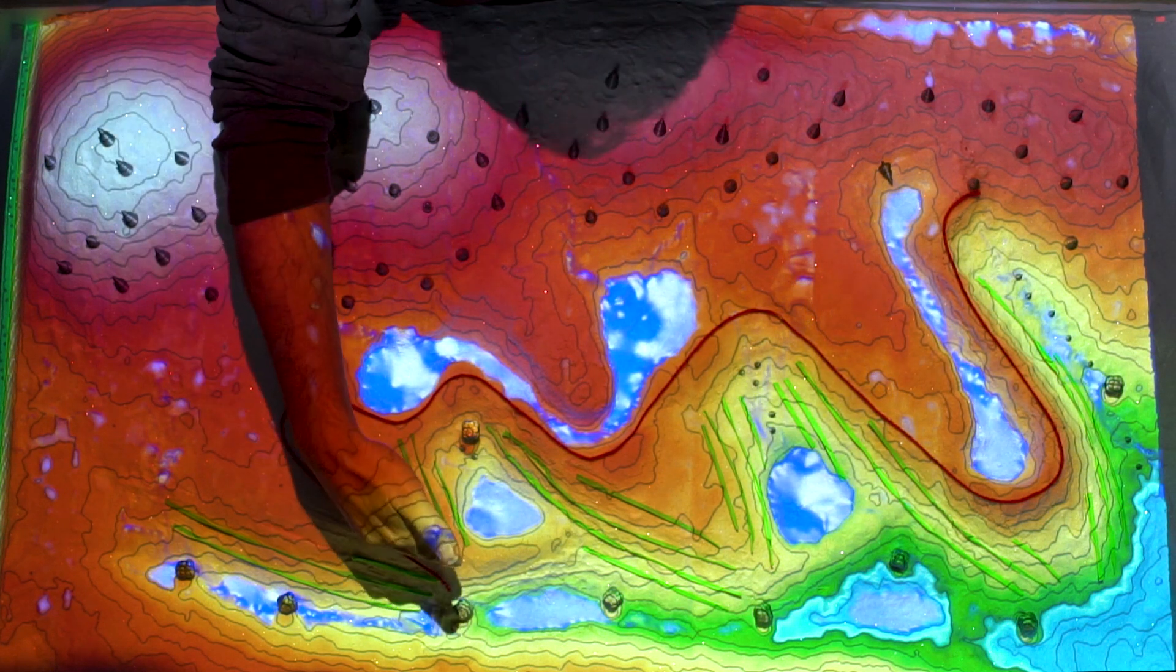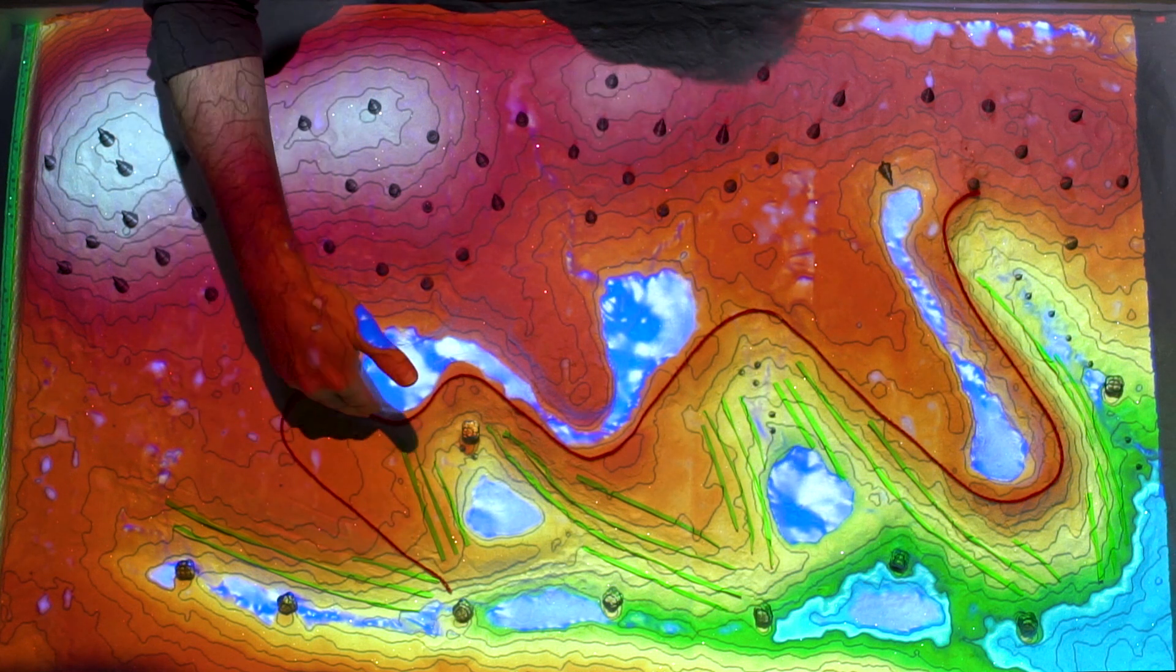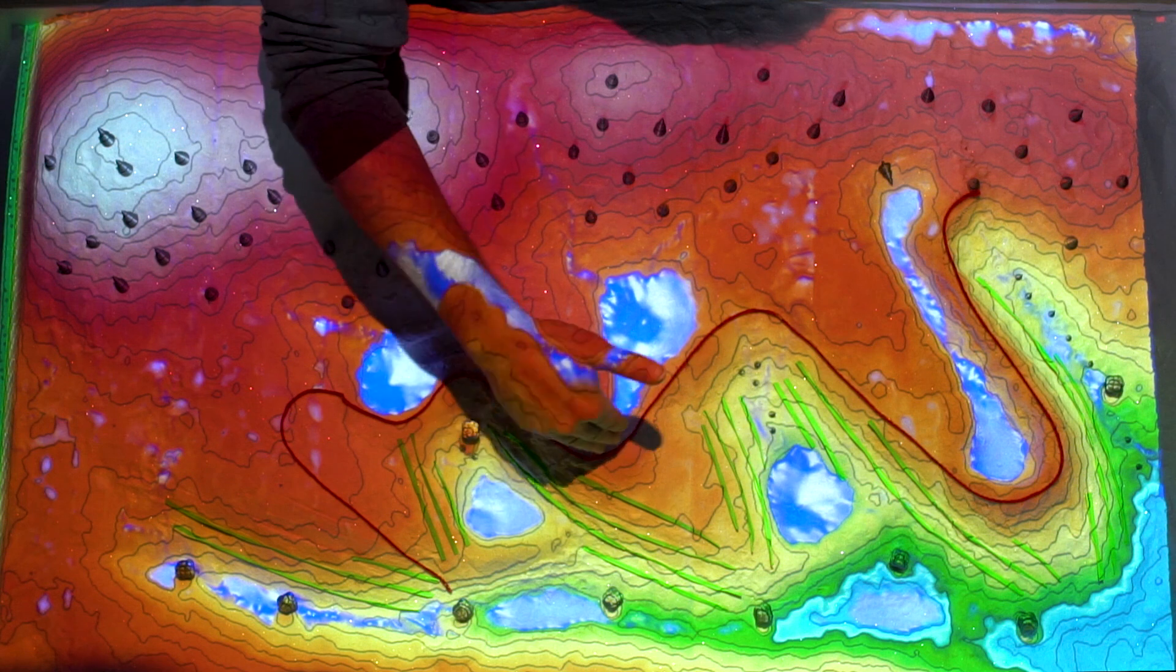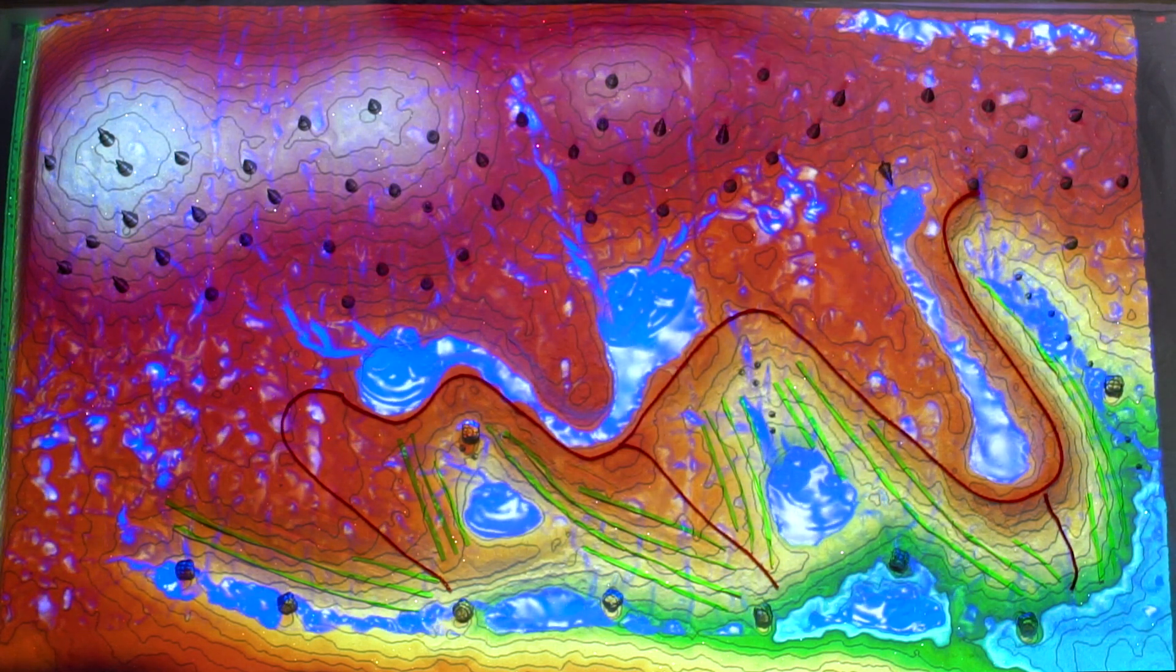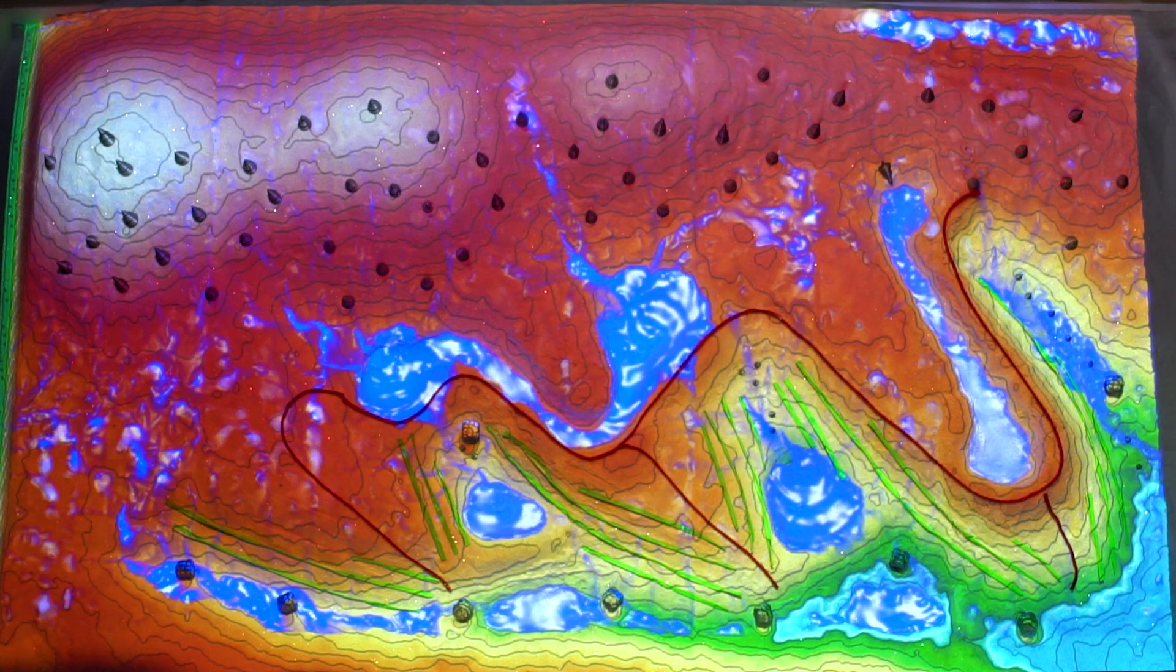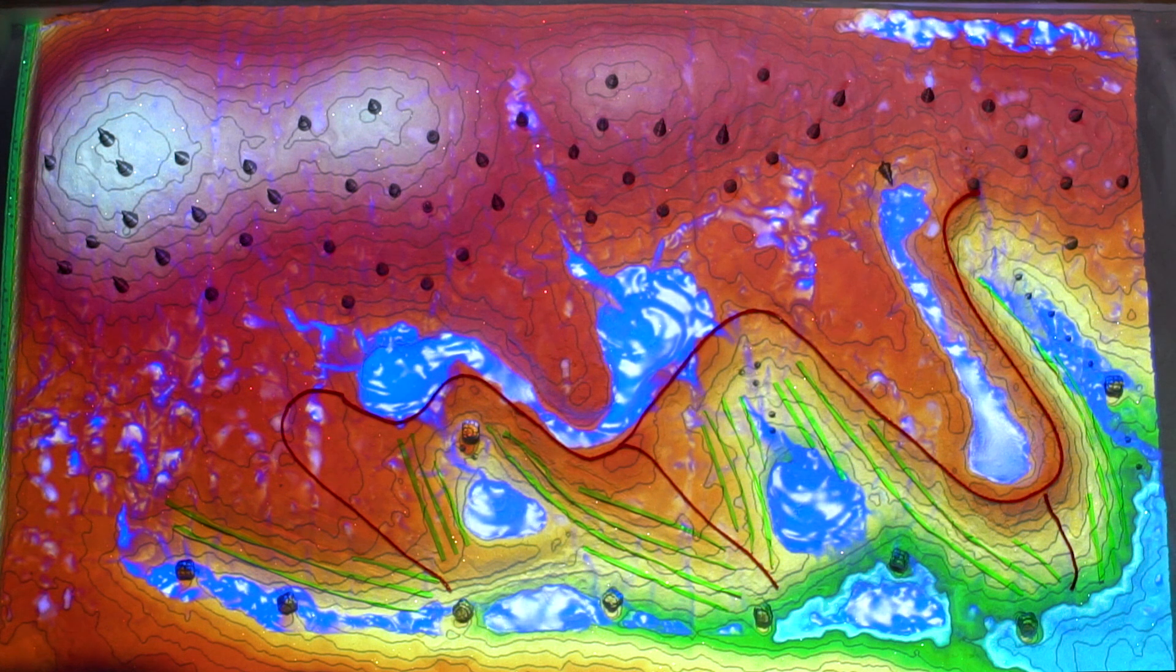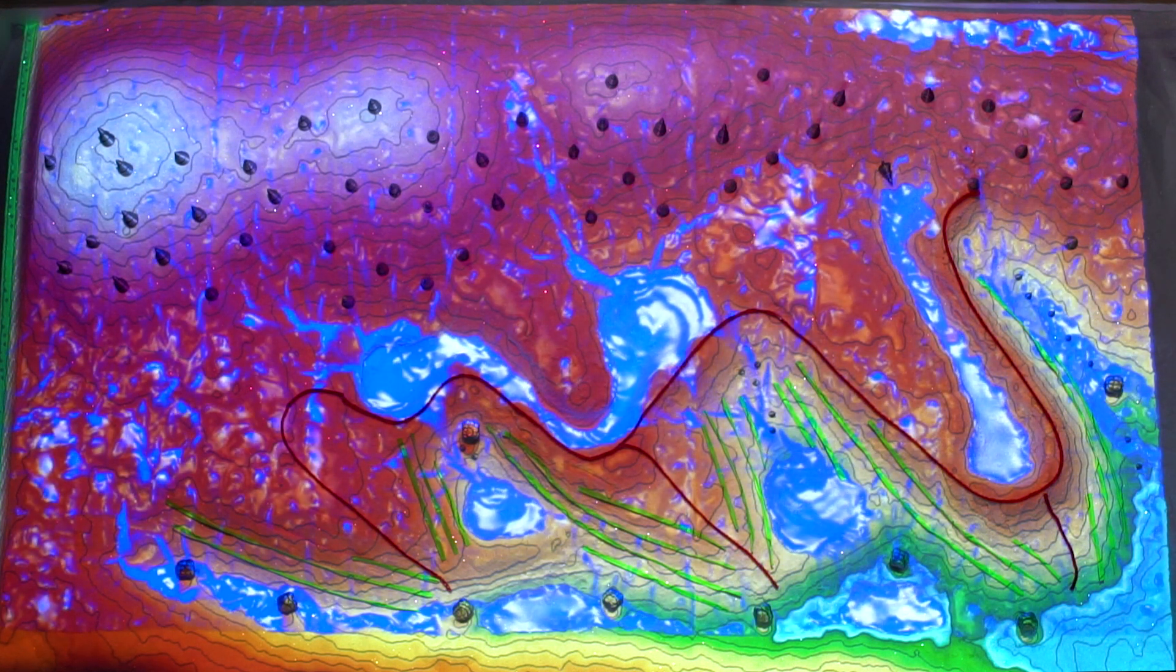So here I put a road on this ridge, and then connected it into our road that goes on our embankment and our diversion. So you can see, when I make it rain here, that our ridges remain dry, while our valleys become wet, and we have rainfall over the whole landscape.